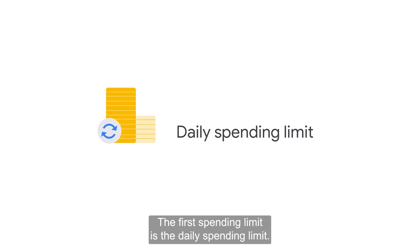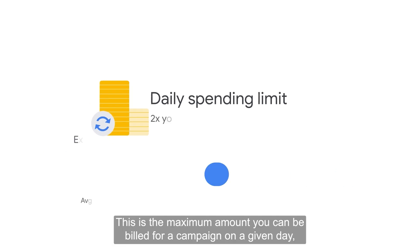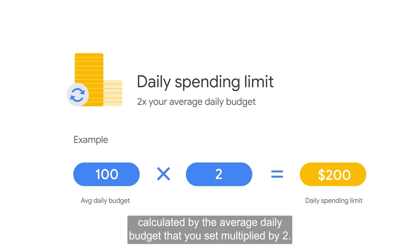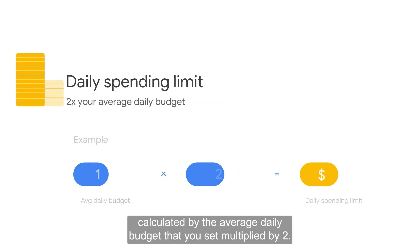The first spending limit is the daily spending limit. This is the maximum amount you can be billed for a campaign on a given day, calculated by the average daily budget that you set multiplied by 2.